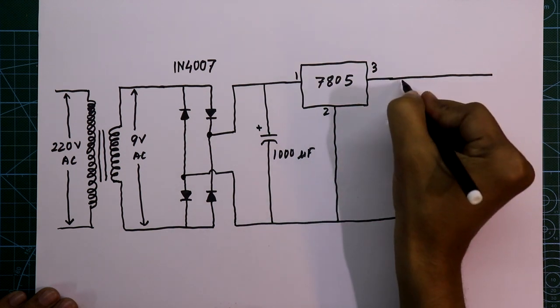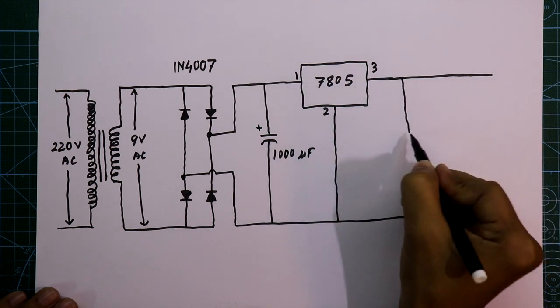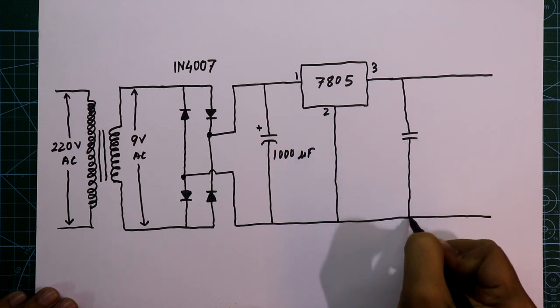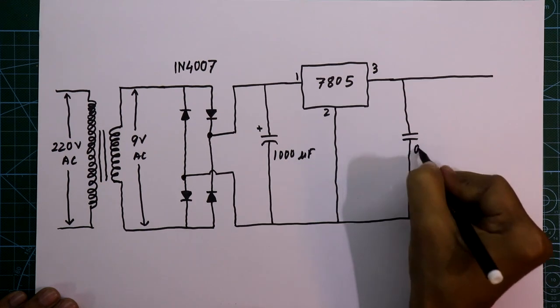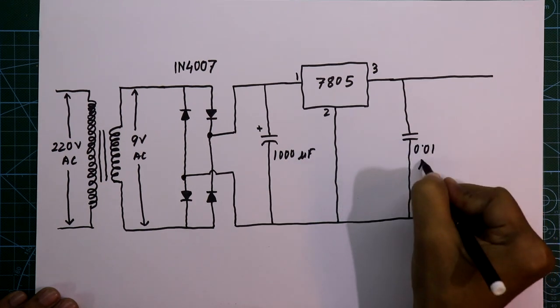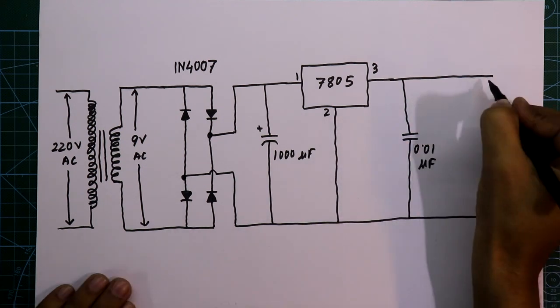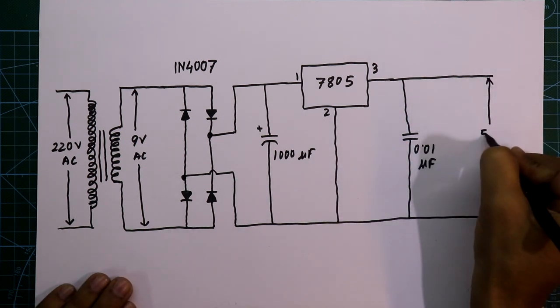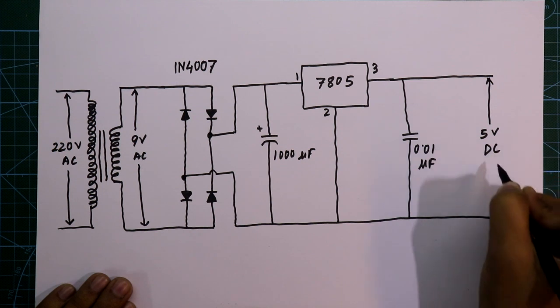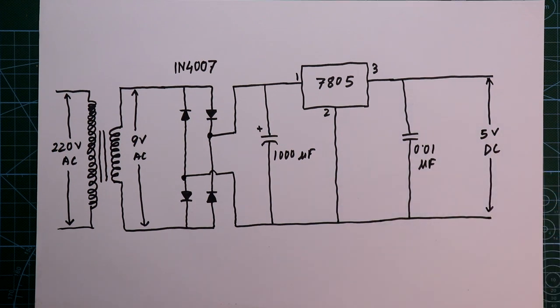But before that we need to add one more capacitor. It must be ceramic capacitor and the value of the capacitor is 0.01 microfarad. This is the circuit diagram for 5 volt DC. Now we are going to discuss the practical circuit.